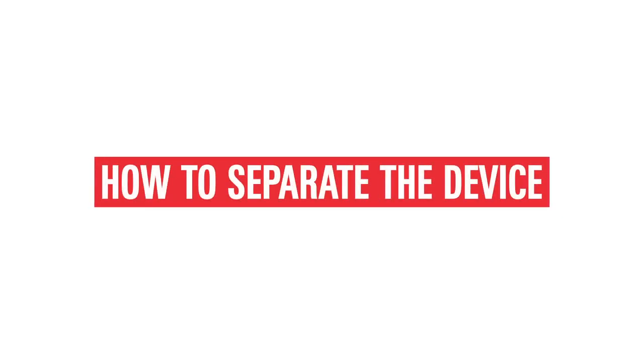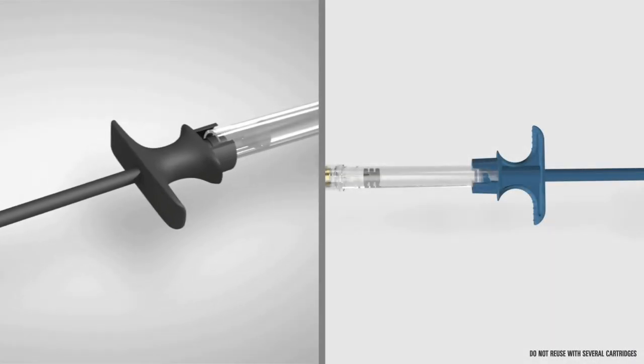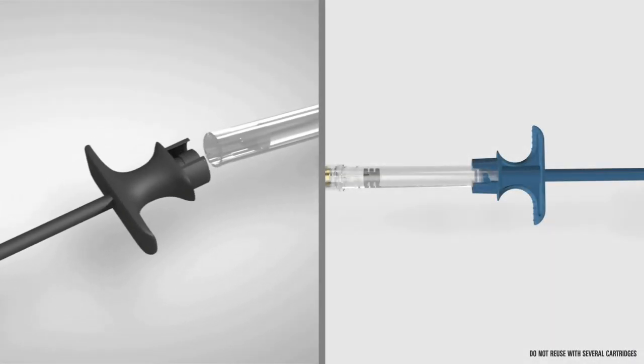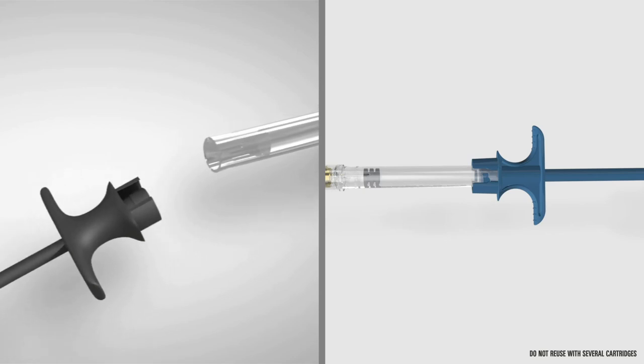How to separate the device. If you need to change the cartridge or dispose of the syringe, with ULTRA SAFETY PLUS, you could just separate the handle from the syringe body by pulling them apart.